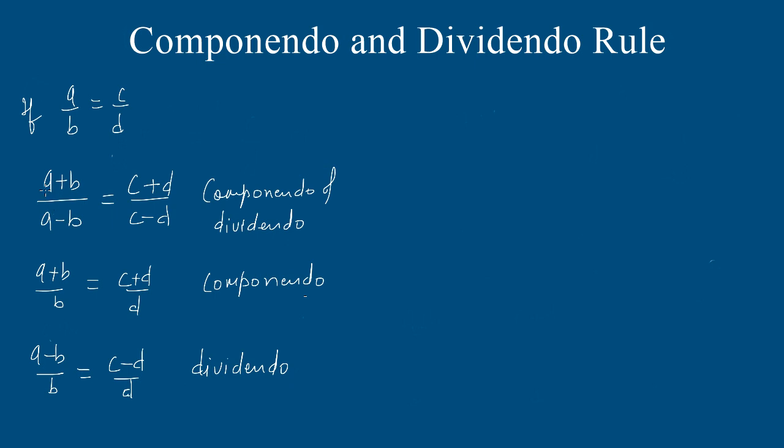If A/B equals C/D, then (A+B)/(A-B) equals (C+D)/(C-D) is componendo and dividendo. Or (A+B)/B equals (C+D)/D is componendo, and (A-B)/B equals (C-D)/D is dividendo.